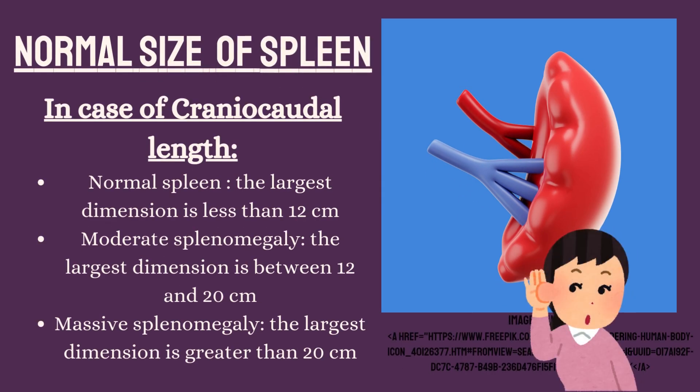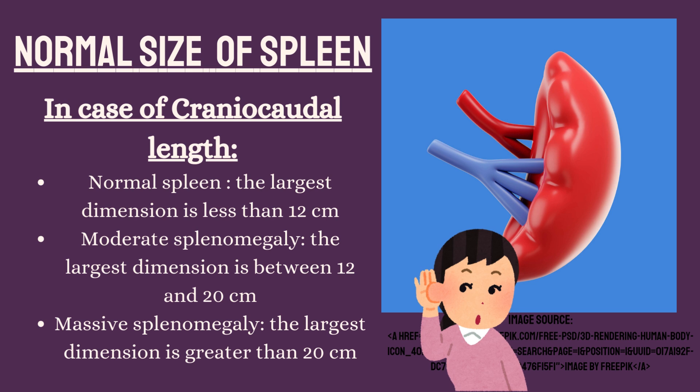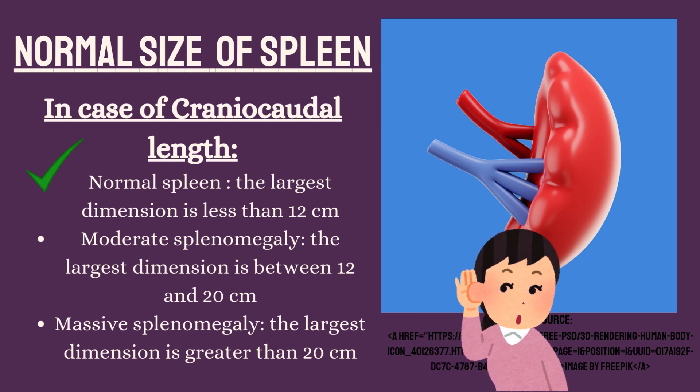What is the normal size of the spleen? In terms of craniocaudal length, for a normal spleen the largest dimension is less than 12 cm. For moderate splenomegaly, the largest dimension is between 12 and 20 cm. For massive splenomegaly, the largest dimension is greater than 20 cm.